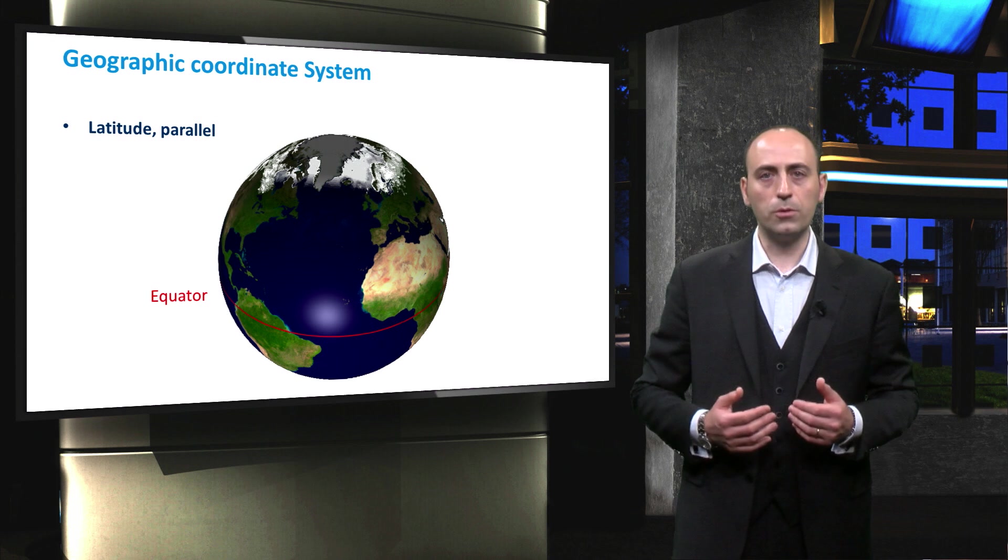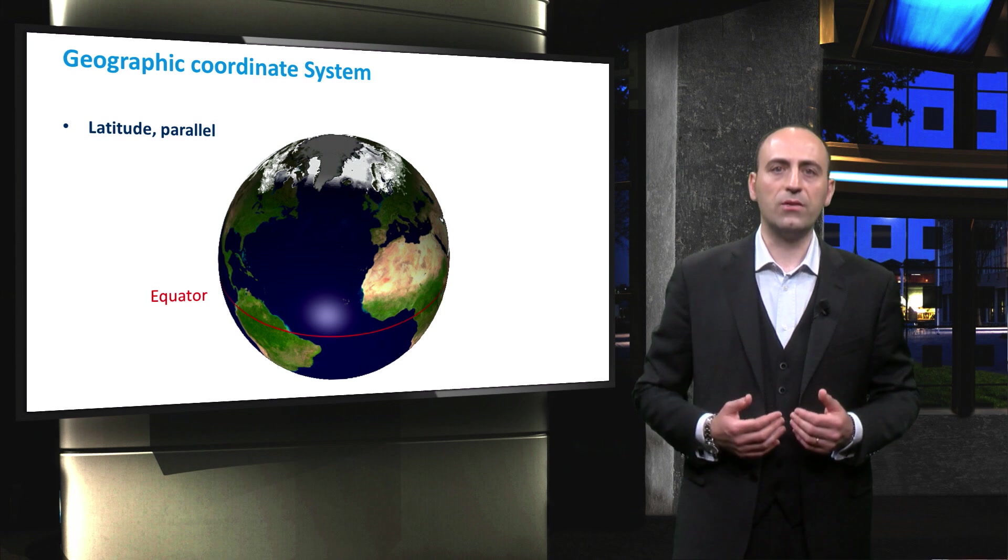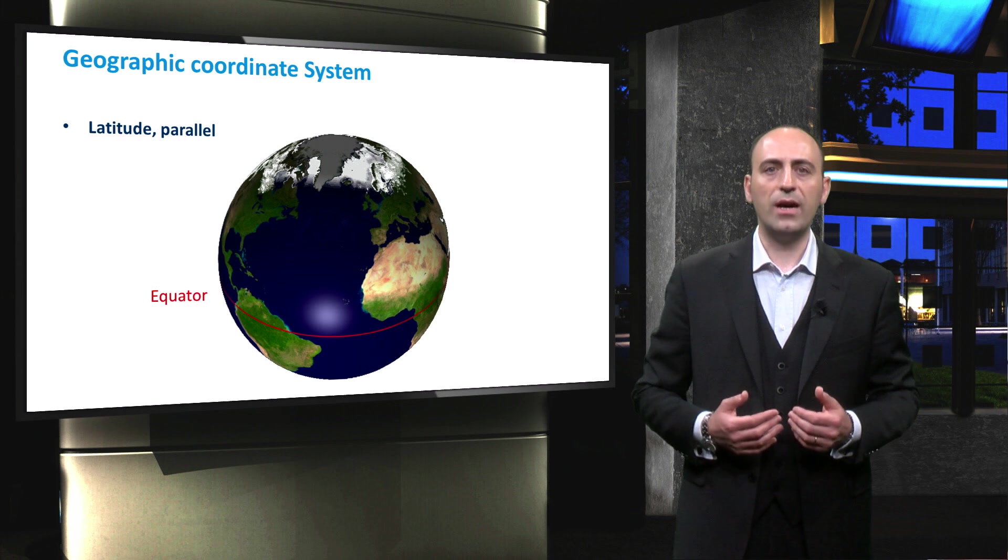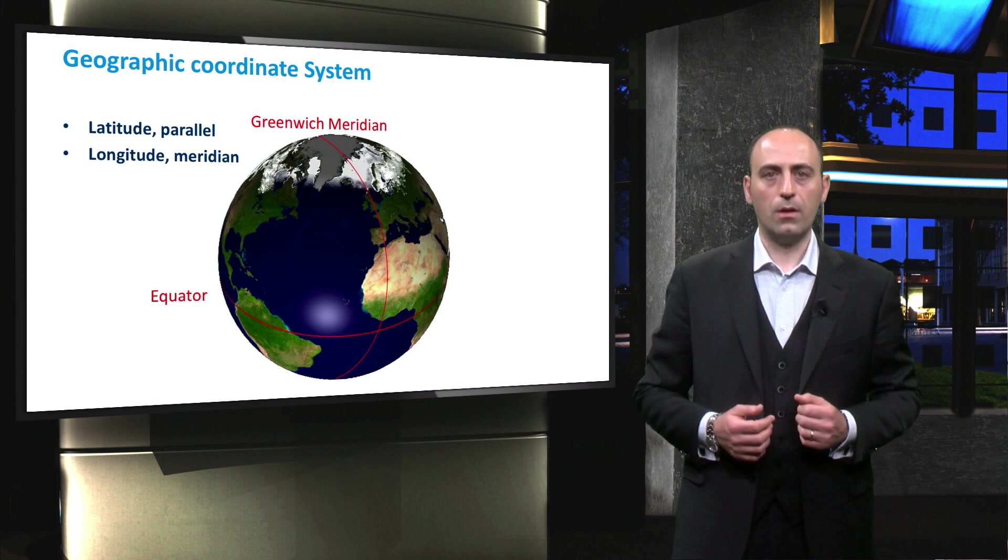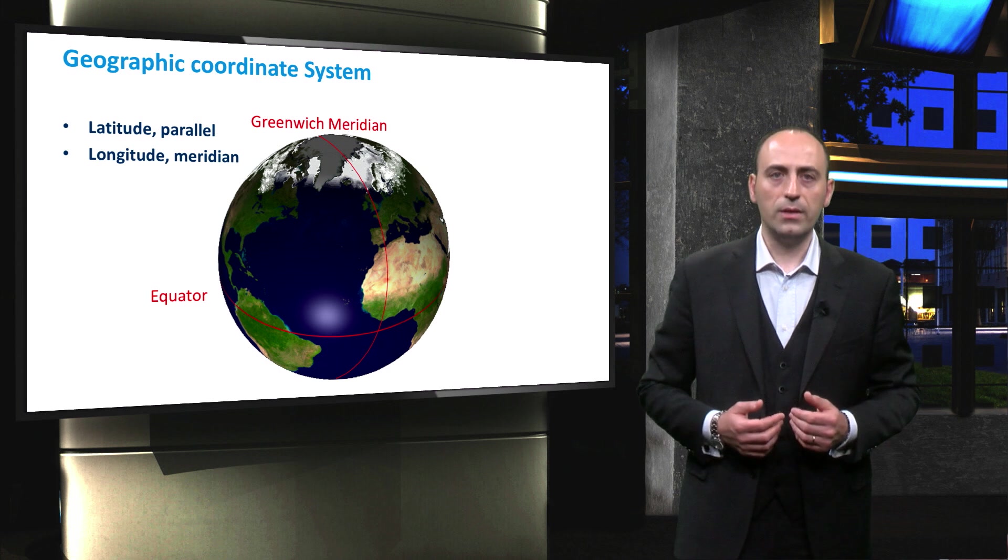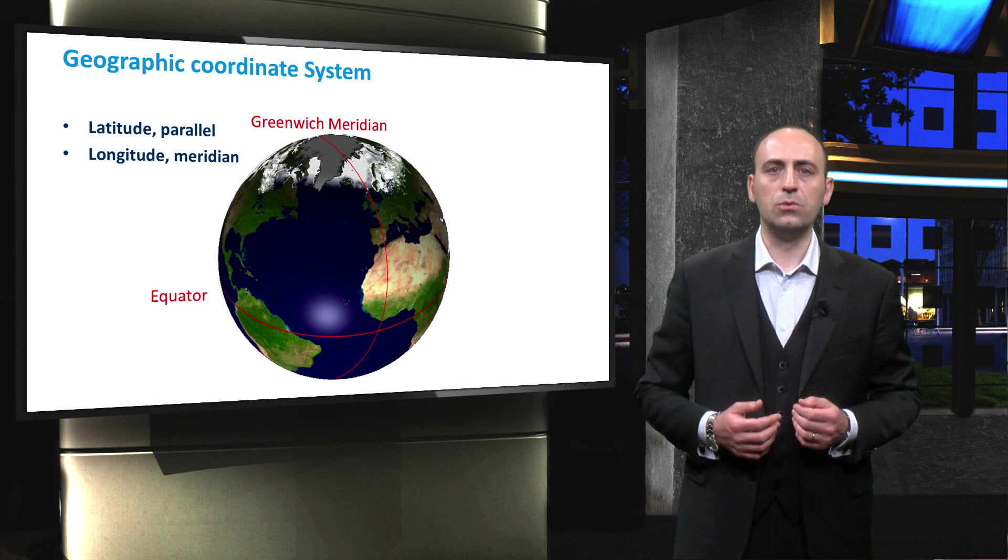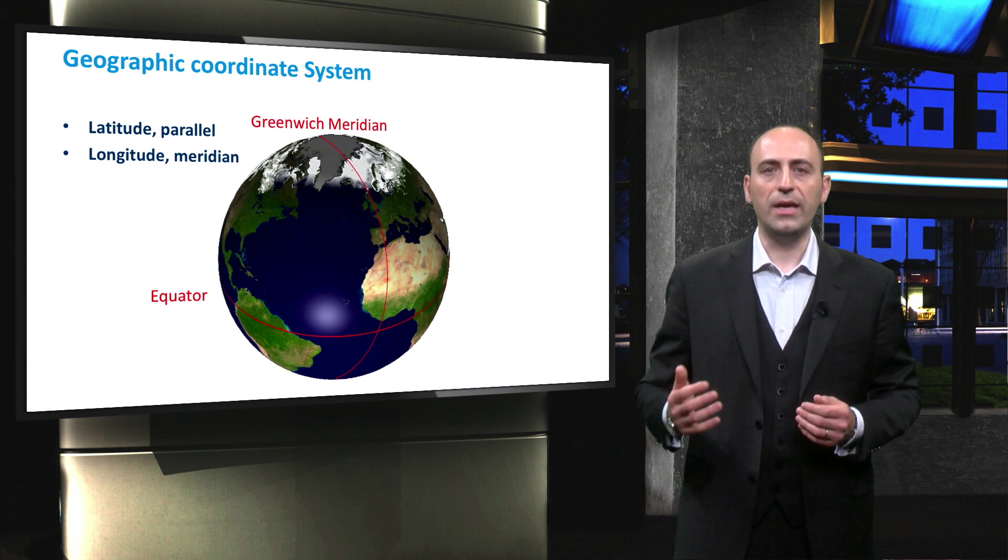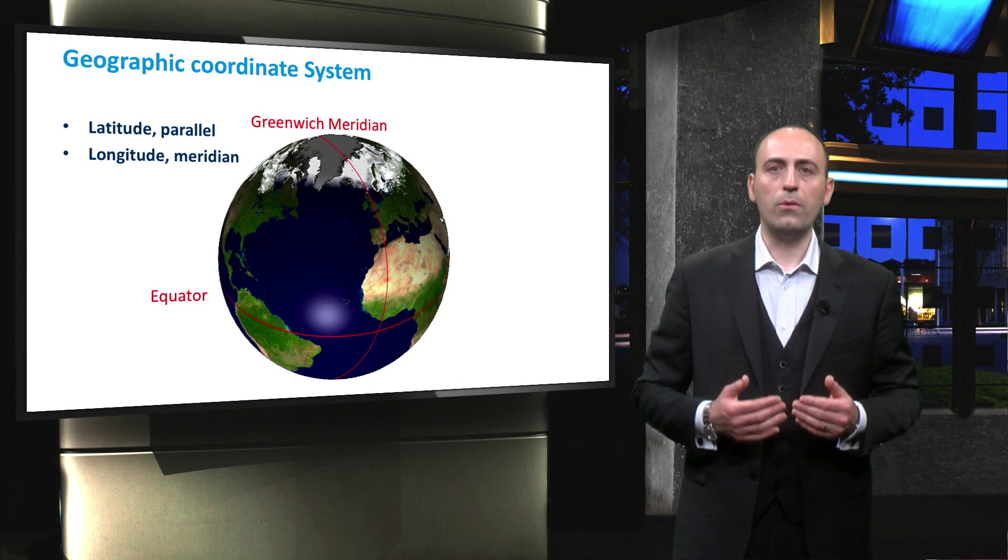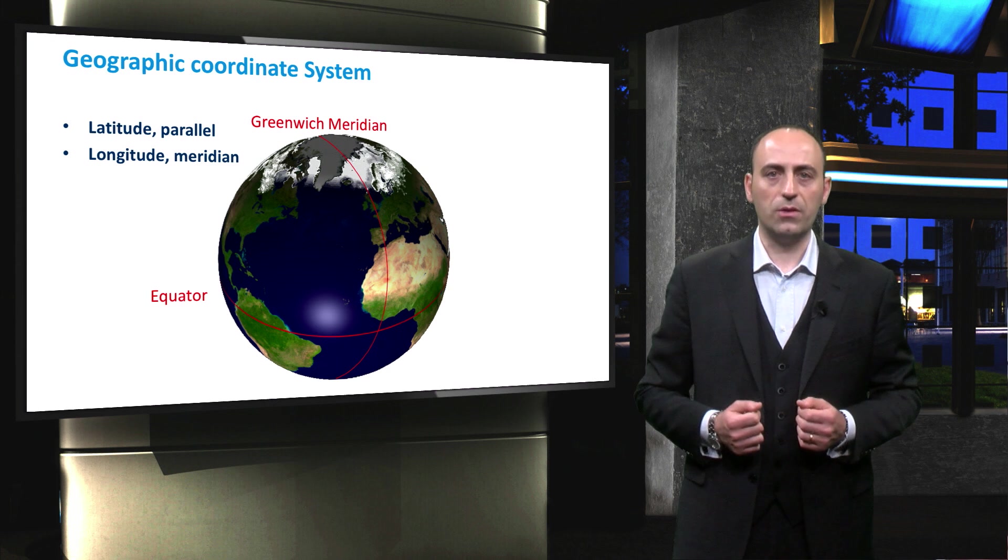Thus, the North Pole is 90 degrees north and the South Pole is 90 degrees south, and the equator divides the globe into northern and southern hemispheres. The longitude of a point is the angle between the Greenwich reference meridian and the meridian that passes through that point. This angle can be west or east since Greenwich meridian determines the proper eastern and western hemispheres.